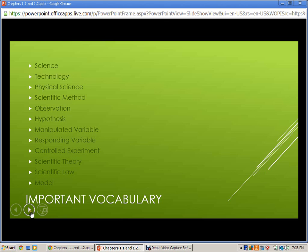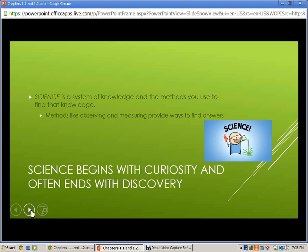Now, science. What is it? Science is a system of knowledge and the methods you use to find that knowledge. So the methods that we use to find that scientific knowledge are things like observing and measuring.